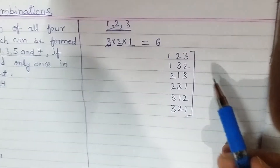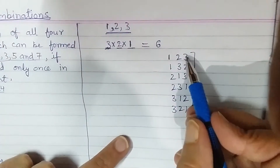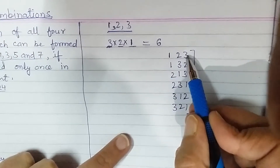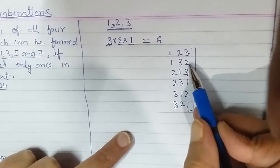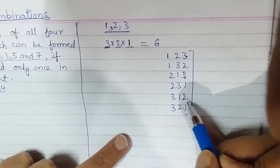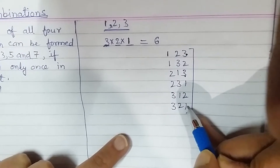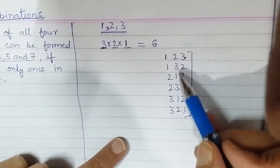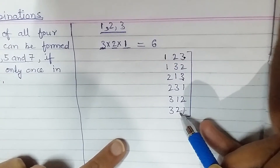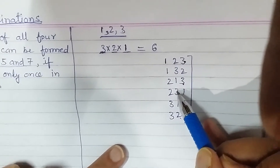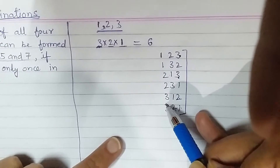Now observe carefully. Look at the units digits: 3 appears twice, 2 appears twice, and 1 also appears twice. At the tens place the same pattern holds — each of the digits 1, 2, and 3 appears exactly two times. Similarly, for the hundreds place, each digit is also coming two times.